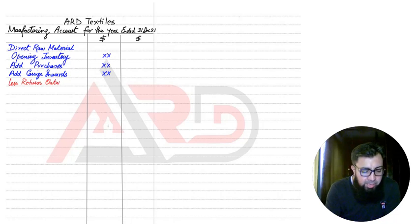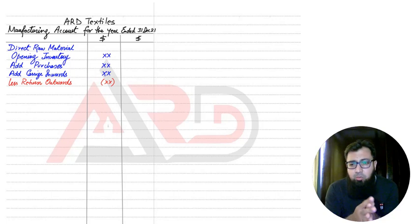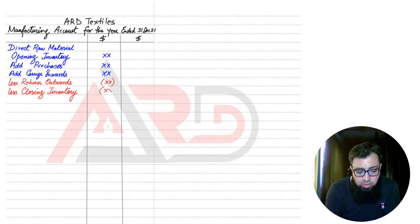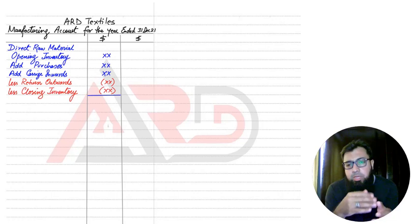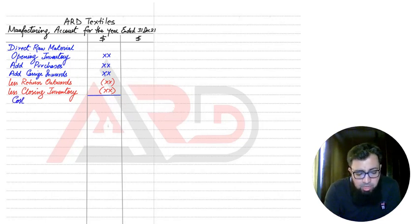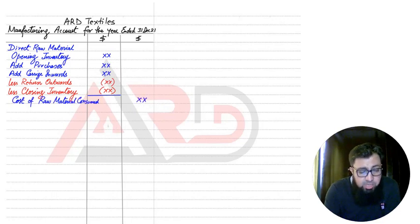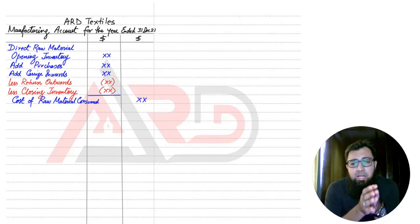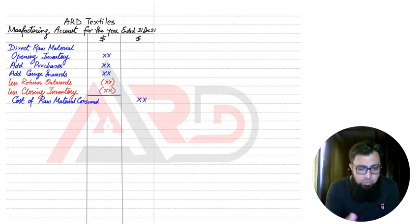We then deduct returns outward, also known as purchase returns — material that was faulty and returned to our supplier. We also deduct closing inventory, which is the raw material unused at the end of the year that will be used in the next accounting period. The final answer to all of these becomes the cost of raw material consumed — the material used in the current accounting period.